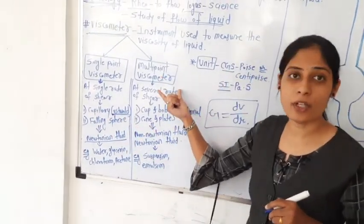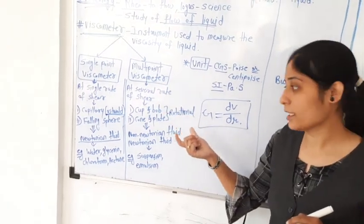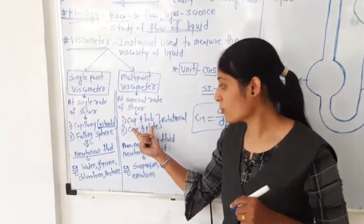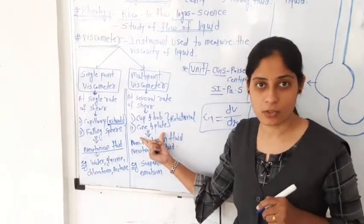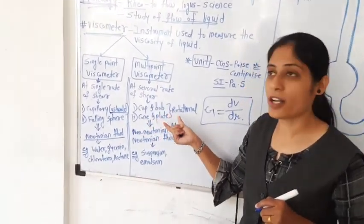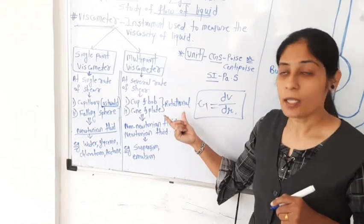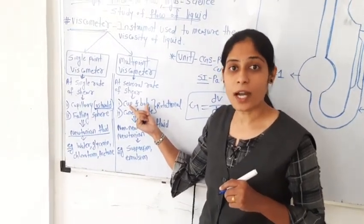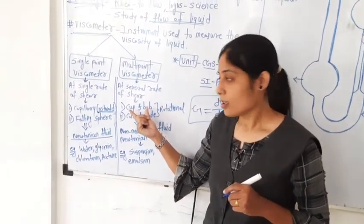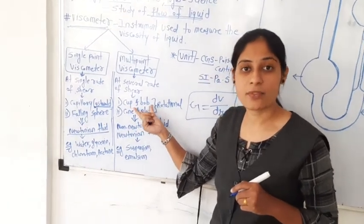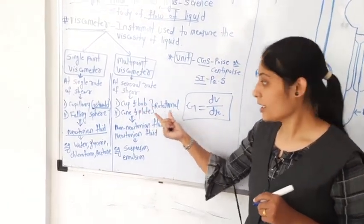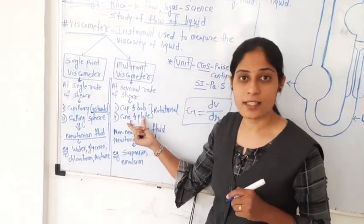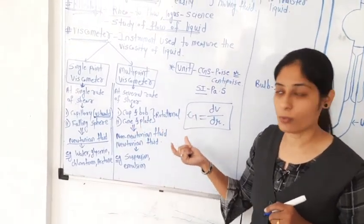In the multipoint viscometer, there are two types: first, cup and bob viscometer, and second, cone and plate viscometer. Both viscometers are called rotational viscometers. In the cup and bob viscometer, the bob rotates. In the cone and plate viscometer, the cone part rotates. Hence they are called rotational viscometers.